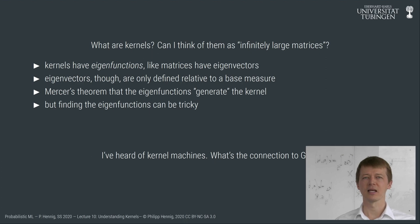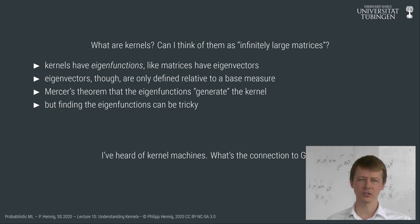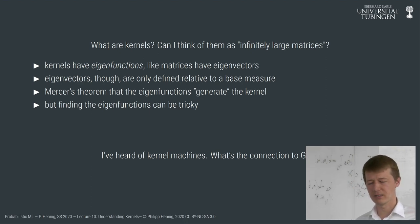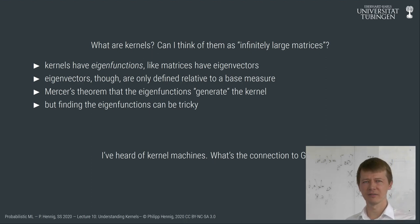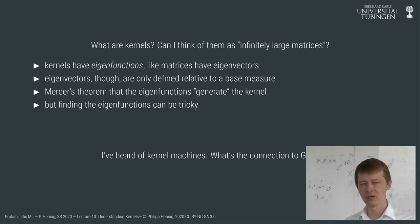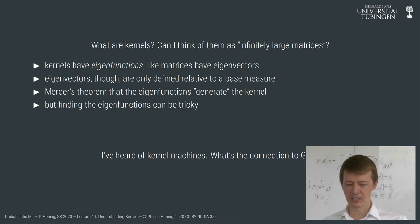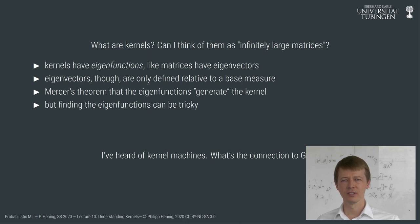This idea has various names: it's called random Fourier feature expansions, or people have used words like 'kitchen sinks' for it. It's due to Ali Rahimi and Ben Recht, formalized and published at NeurIPS in 2008. This is a step about 100 years forward from a pure mathematical description to a concrete algorithm using insights about kernels, which can drastically reduce computational cost, at least in low-dimensional spaces. So what we've just seen is that kernels can be thought of as infinitely large matrices, with eigenfunctions defined relative to some measure and non-negative eigenvalues.